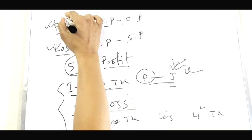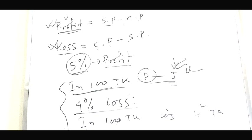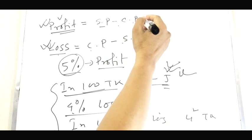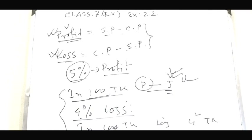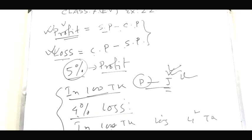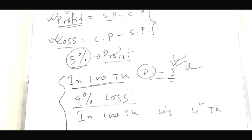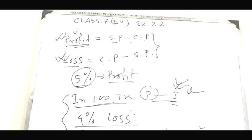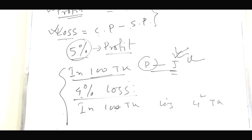Profit and Loss will always depend on cost price. The cost price is the buying price — the price you pay before selling. This is the most important thing to understand.